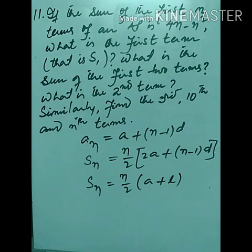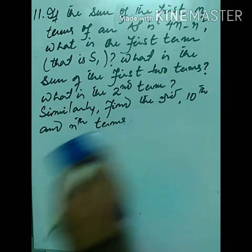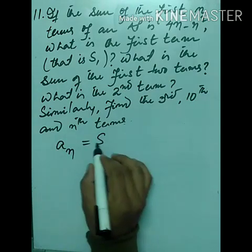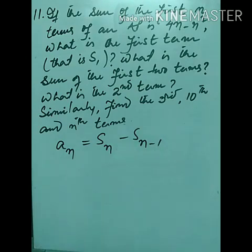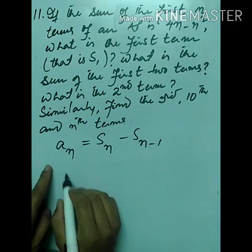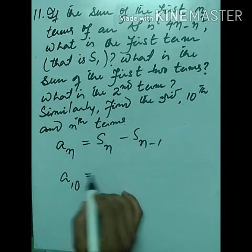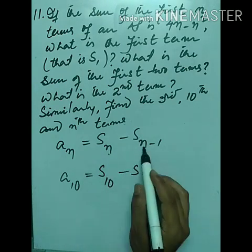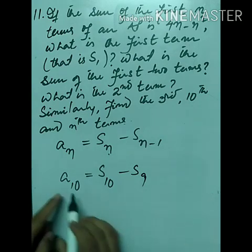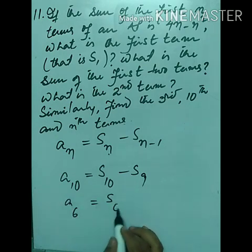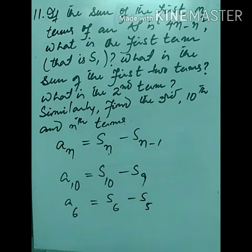We also have Sₙ = n/2 × (first term + last term). Today I'll be adding one more formula: aₙ = Sₙ − Sₙ₋₁. For example, if n = 10, then a₁₀ = S₁₀ − S₉. Similarly, a₆ = S₆ − S₅, and a₇ = S₇ − S₆.